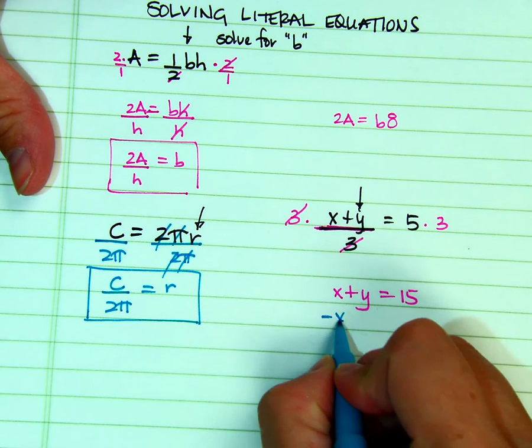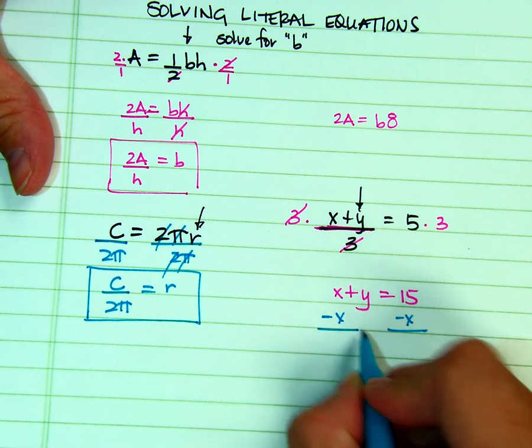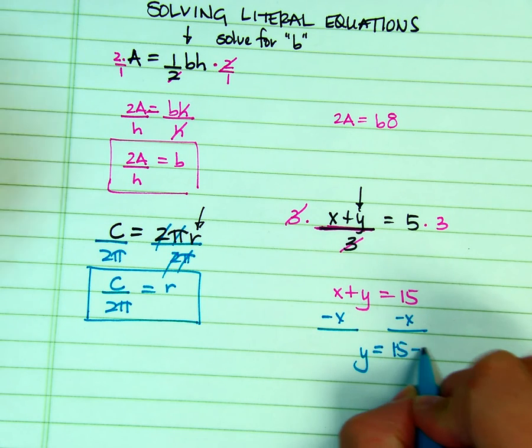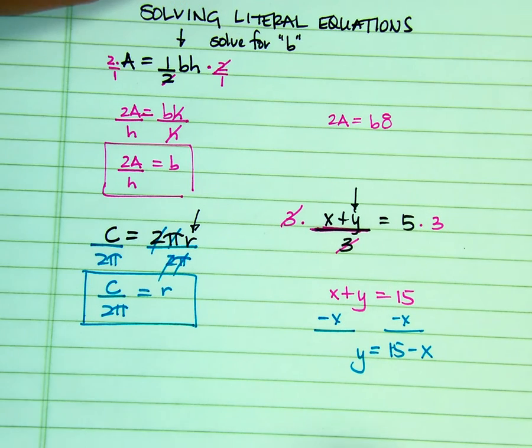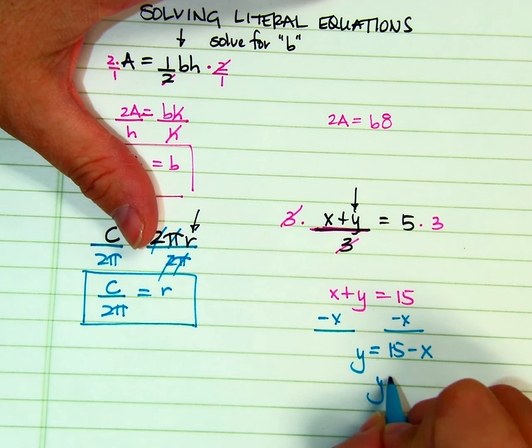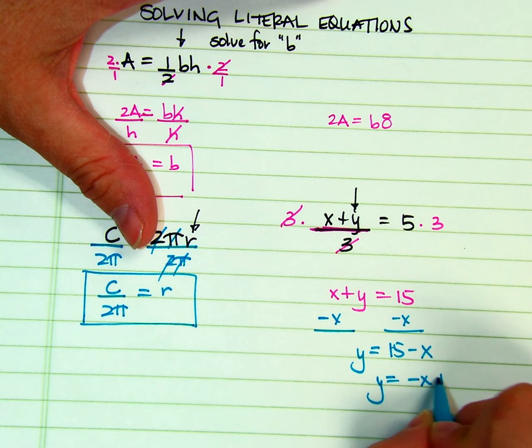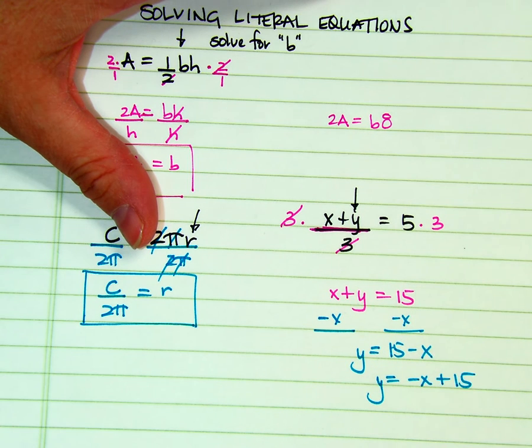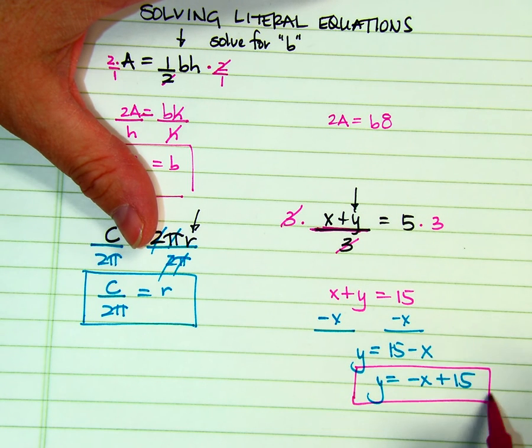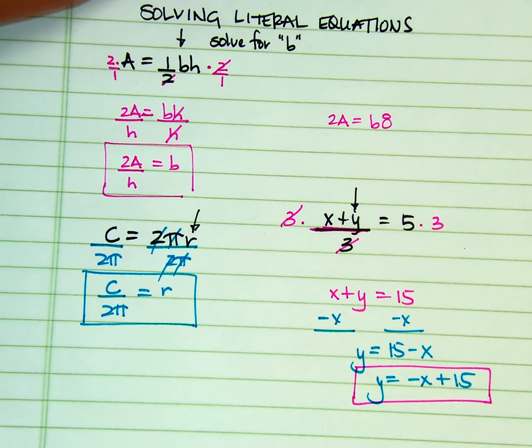And have Y equals, if you have 15 minus X, that is fine. When we get into graphing linear equations, you are probably going to want that term with the X first. Notice the X was negative, it is still negative. The 15 is positive, the 15 is still positive. So I just changed the order, I did not change the values.